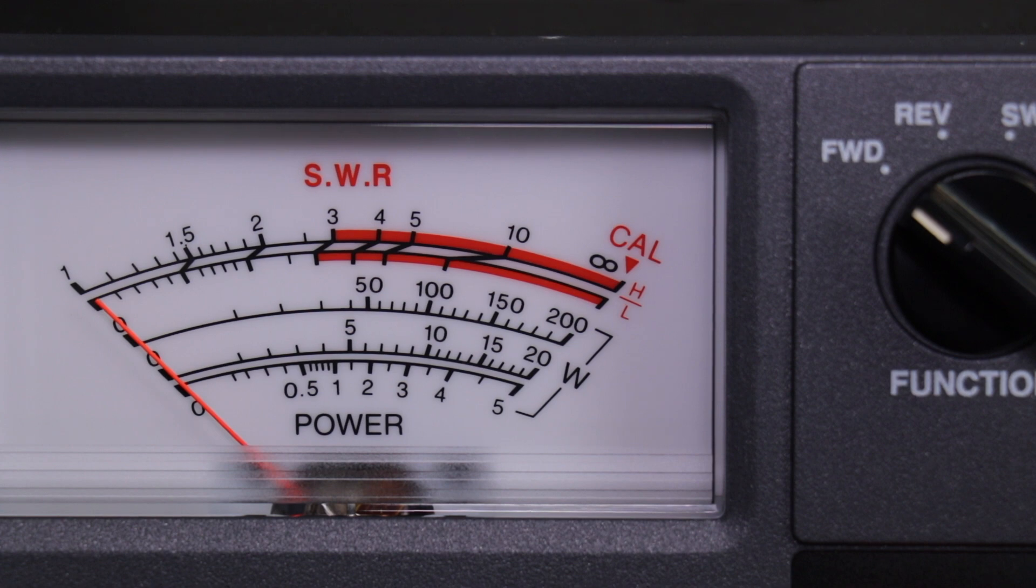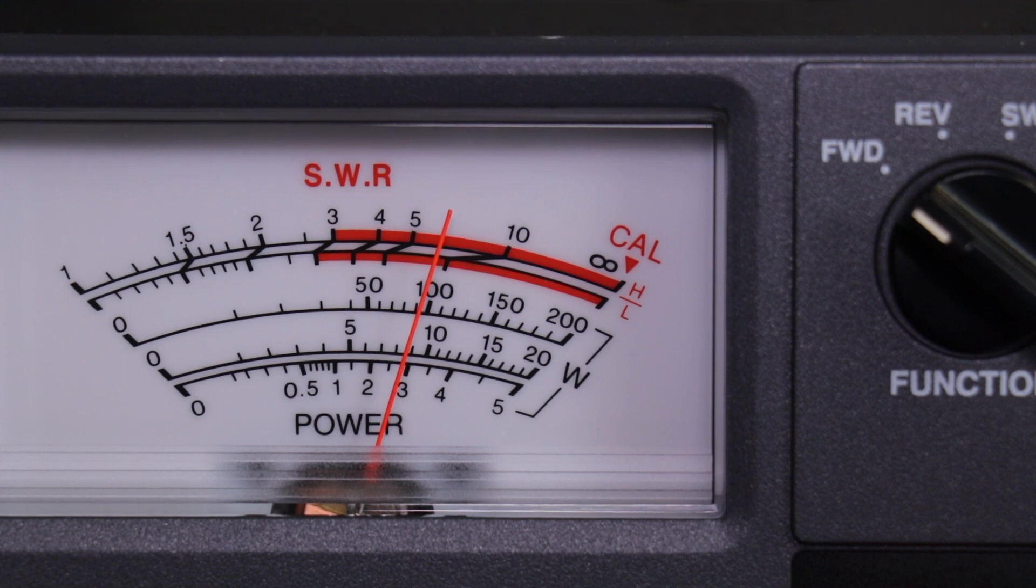Now I have the radio set to 80 watts. We're still set to forward and the power rating is set to 200 on the meter. On this one it looks like we're at about 95 watts on the upper scale.